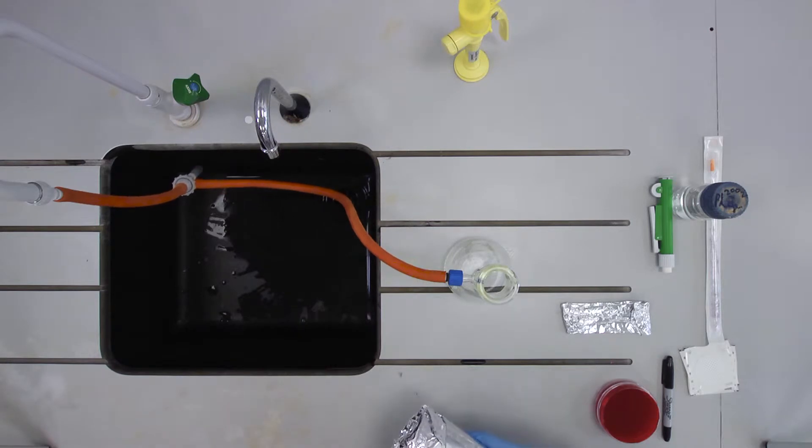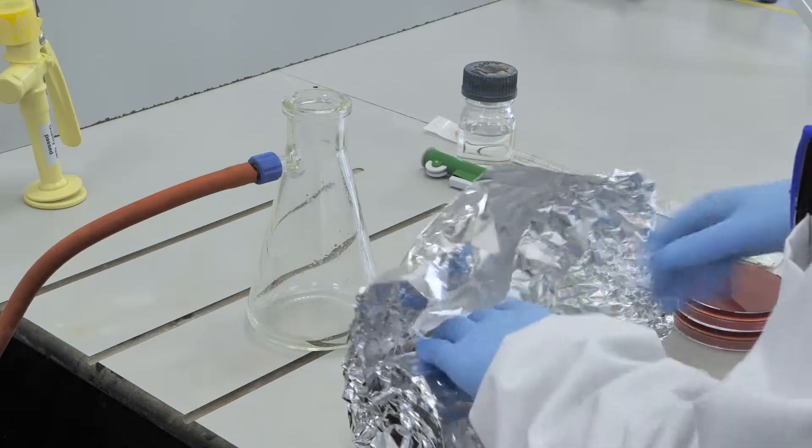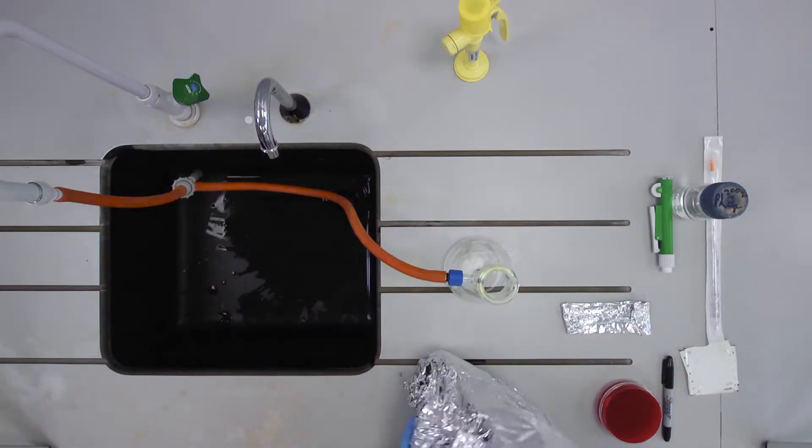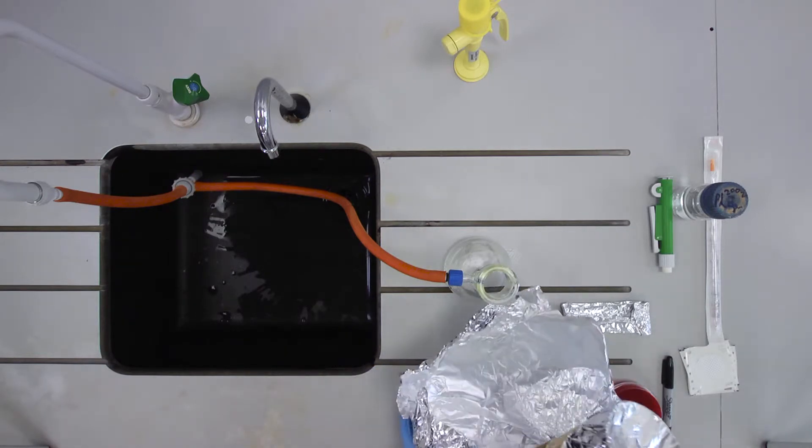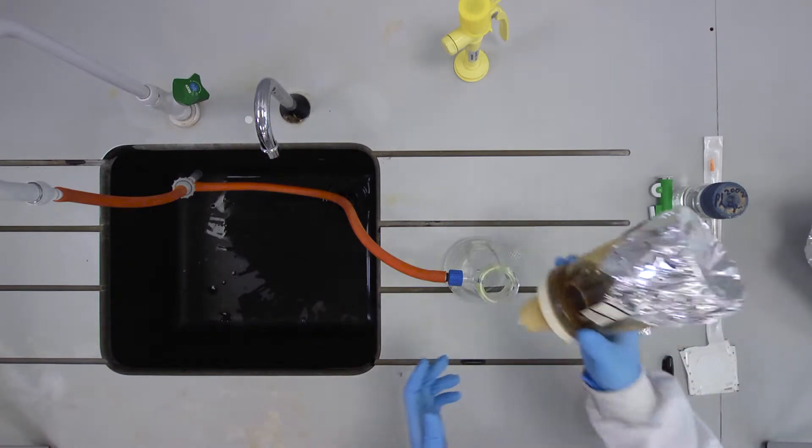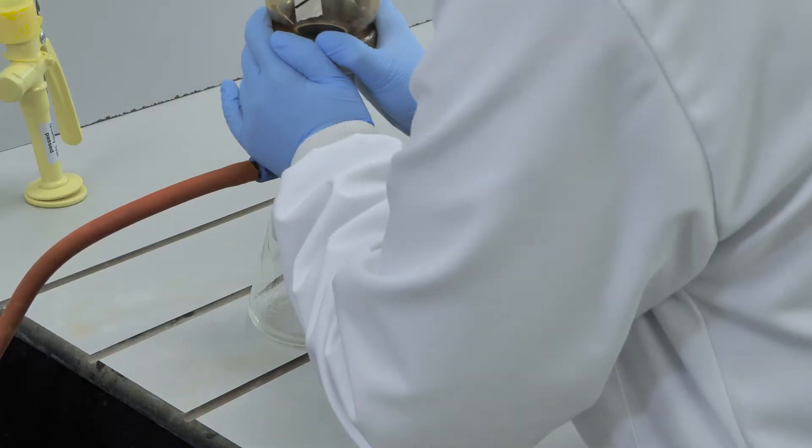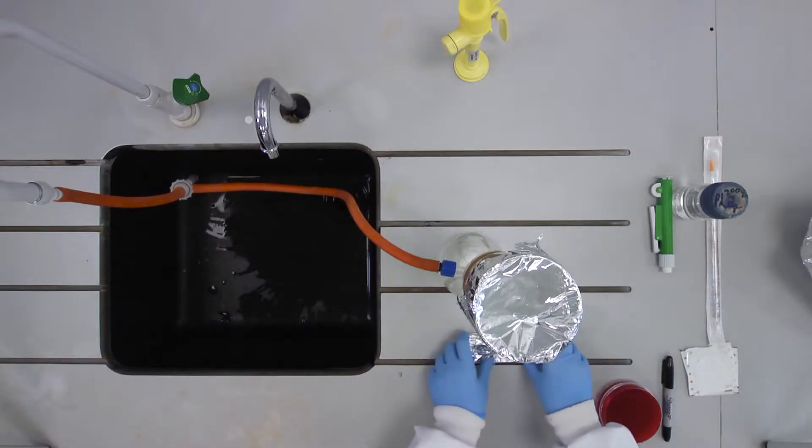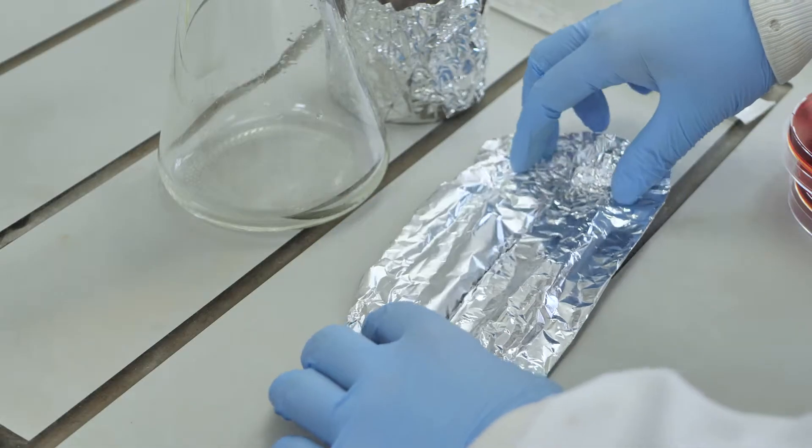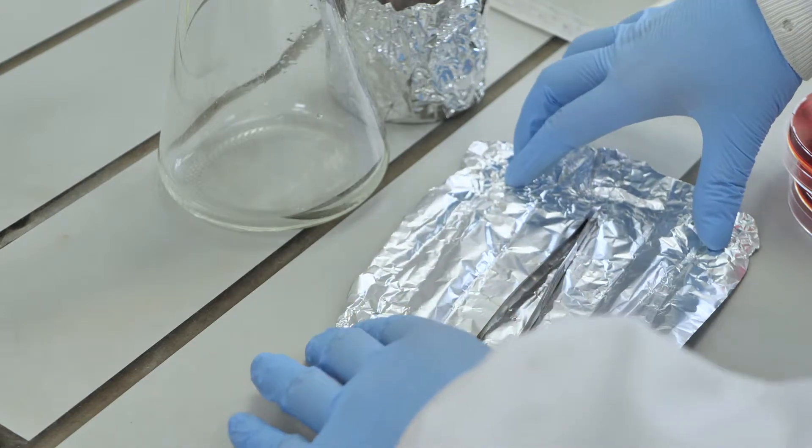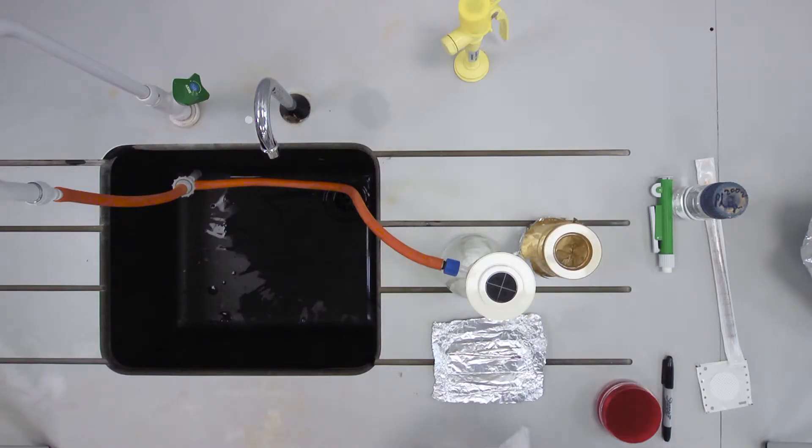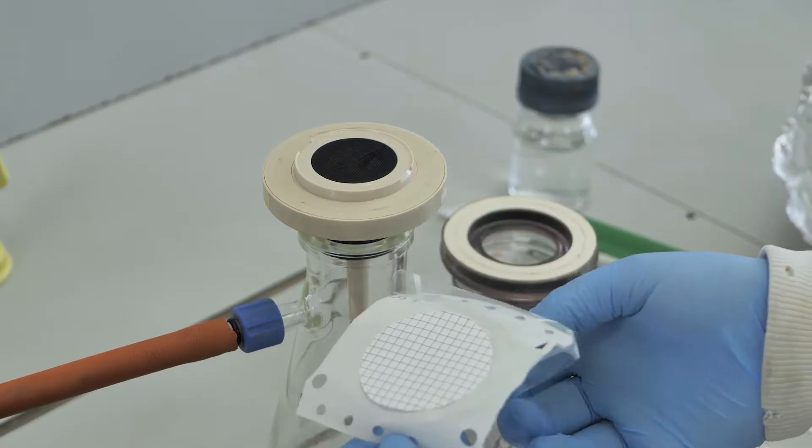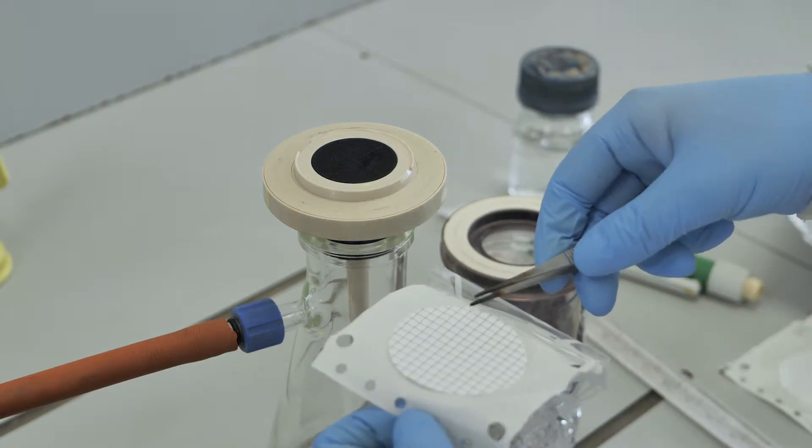Open the autoclaved filter housing unit, leaving the taped tin foil lid in place and set it securely on the vacuum flask. Open the tin foil package containing a pair of tweezers and aseptically transfer a sterile membrane filter with the grid side facing up onto the base of the filter unit.